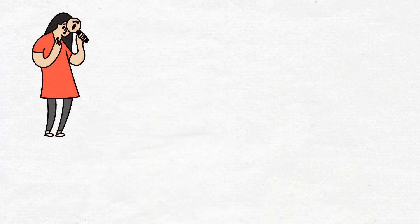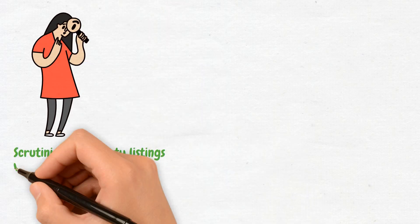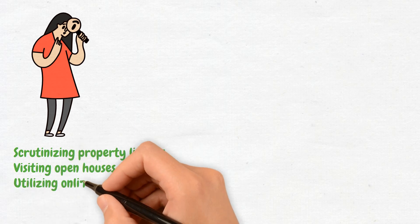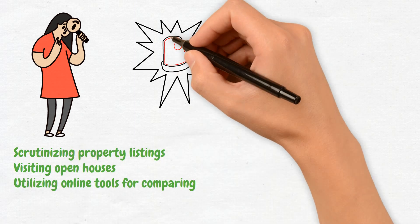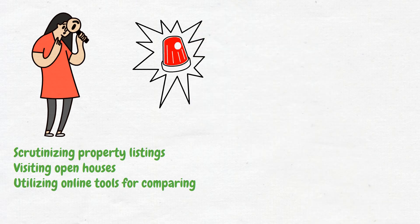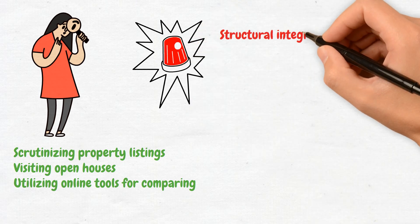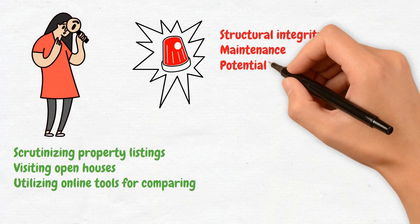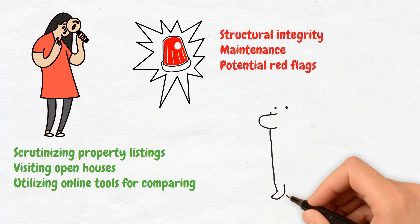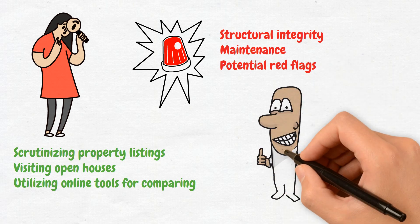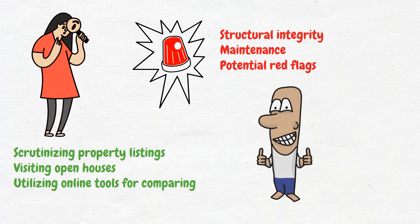This includes scrutinizing property listings, visiting open houses, and utilizing online tools to compare properties and their market values. As you tour properties, pay close attention to details like structural integrity, maintenance, and any potential red flags. This will equip you with the skills to make well-informed decisions during your house hunting journey, ensuring that you ultimately find the perfect place to call your first home.